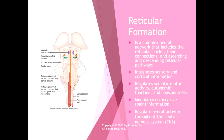The reticular formation is a complex neural network that includes reticular nuclei — groups of neurons with a common function — along with the connections of those nuclei and the ascending and descending reticular pathways. The reticular formation integrates sensory and cortical information, combining what you see, feel, hear, and taste with what you remember and what is being processed in the cerebral cortex.